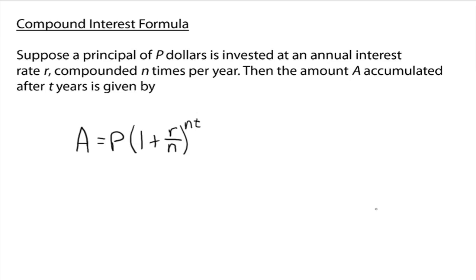All right, so suppose the principle of P dollars is invested at an annual interest rate r, compounded n times per year. Then the amount A accumulated after t years is given by this nice looking formula down here.